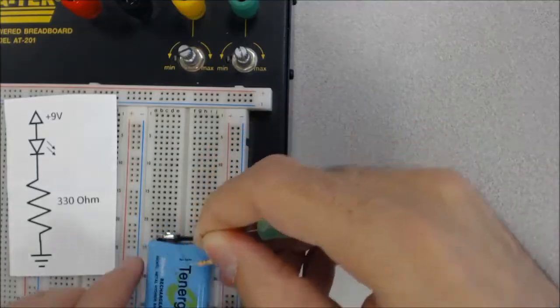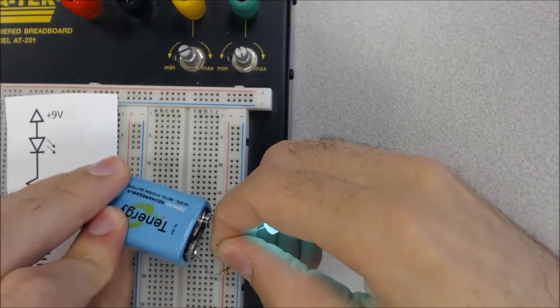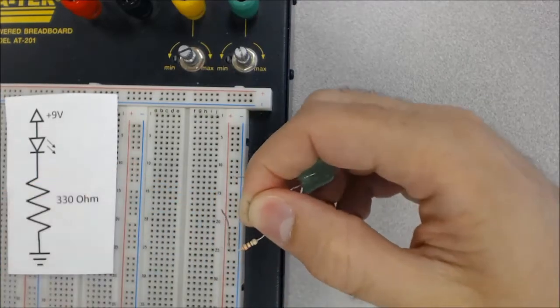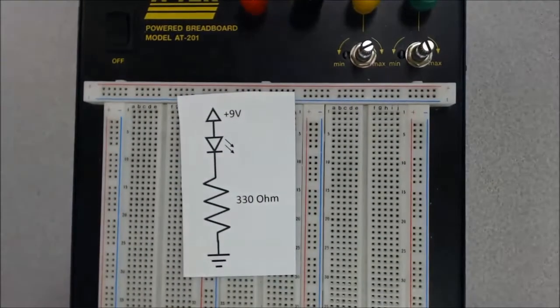And then I could touch one side to the battery's positive and the other side to the ground and you can see that the light lit up there, right? But this would get pretty complicated if you wanted to build a big circuit with it. So let's try to build it on the breadboard instead.